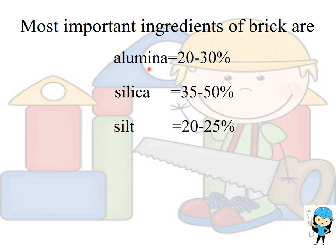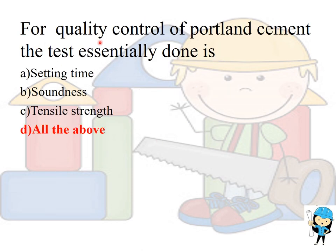The role of alumina in the brick is to provide plasticity required for molding. The role of silica is to prevent shrinkage, and magnesium is for color. For quality control of Portland cement, the tests essentially done are: setting time, soundness, and tensile strength — the answer is all of the above. The setting time test determines the initial and final setting time of the cement. The soundness test determines the change in volume.